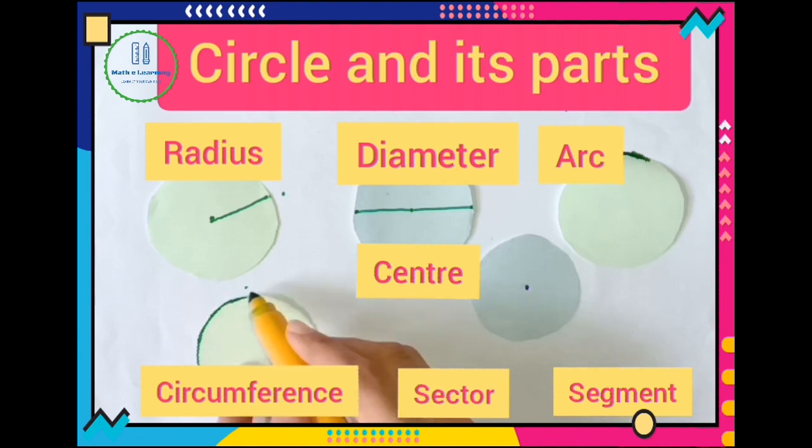So I am drawing this border around this circle and we can say that distance around the circle is called circumference.